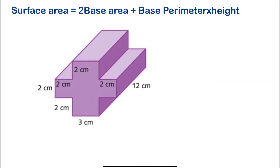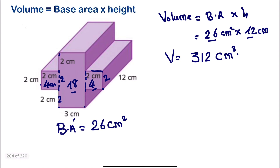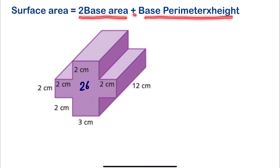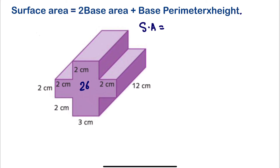Before we calculate the surface area, let's not forget that our base area is 26, because we'll use it here as well. The formula for surface area of a prism is: two times the base area, plus the perimeter of the base times the height. We have the base area already, so next we calculate the perimeter of the base.